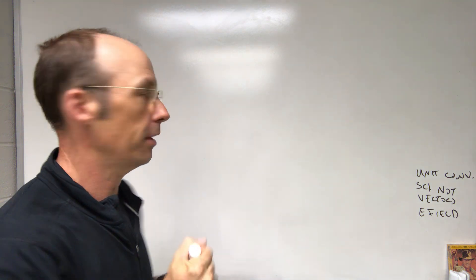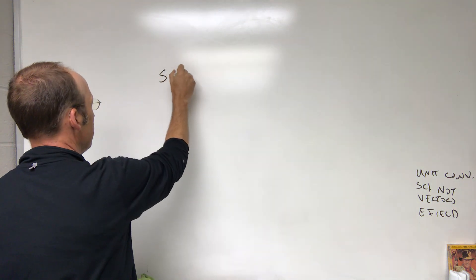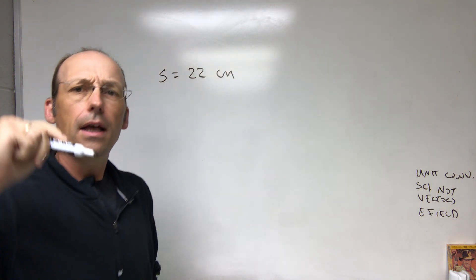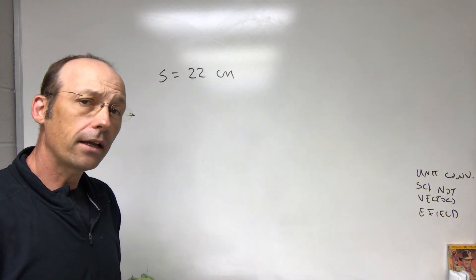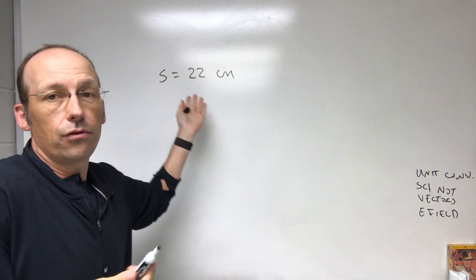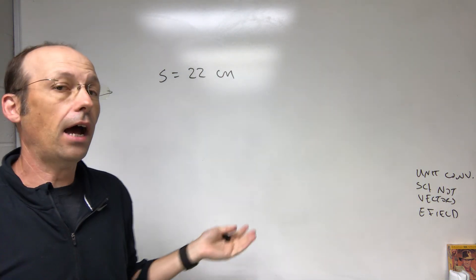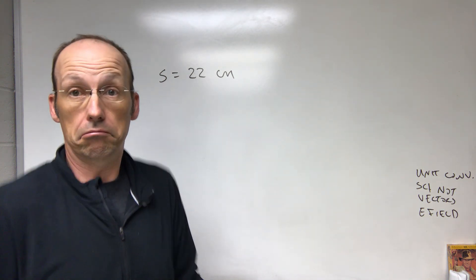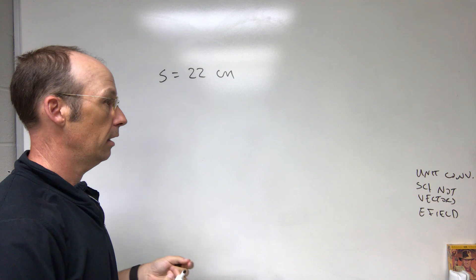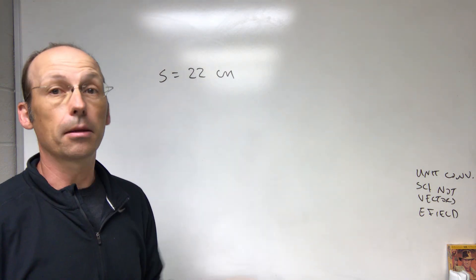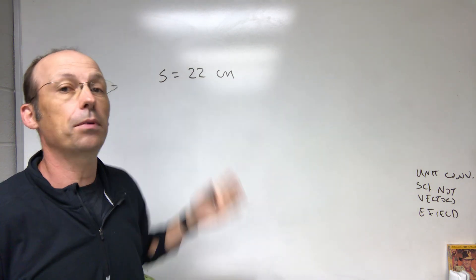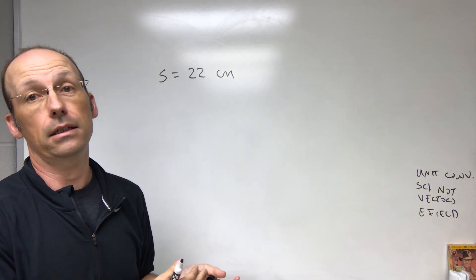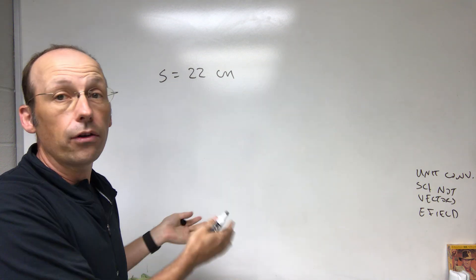Let's say I measure a distance. I'll start with the easiest one: the distance s is 22 centimeters. When you have a quantity without units, you don't have anything. If I ask how long was it and you say 22, I'd say 22 what? 22 chickens? 22 inches? 22 millimeters? You have to put the unit in there.